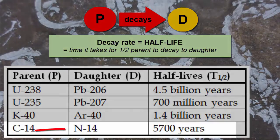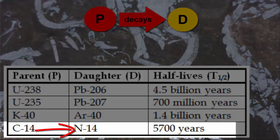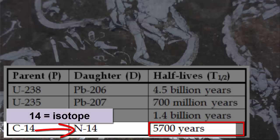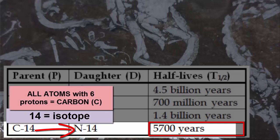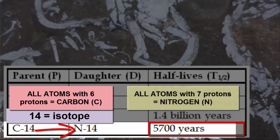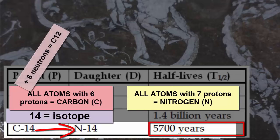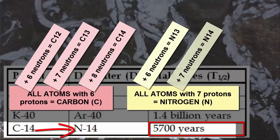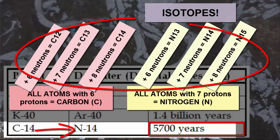For example, carbon-14 decays to nitrogen-14 with a half-life of 5,700 years. The number 14 indicates a particular isotope of these atoms. For example, all atoms with six protons are carbon atoms; all nitrogen atoms have seven protons. However, each atom can have varying amounts of neutrons, and we call all those permutations — the same atom but different numbers of neutrons — isotopes.